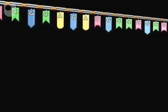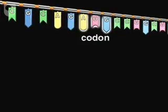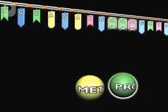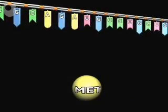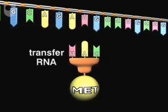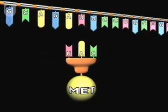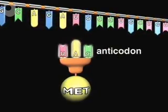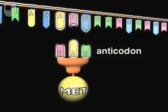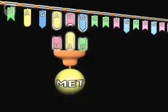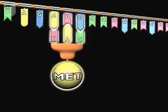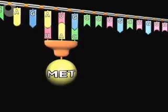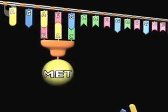It turns out that each triplet of bases on the messenger RNA, called a codon, corresponds to a particular amino acid. There has to be a chemical connection between each triplet codon and each amino acid. A special adapter molecule, called transfer RNA, makes that connection. One end of the adapter carries a particular triplet of bases called an anticodon, which matches up with a specific triplet codon on the messenger RNA.